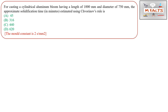The question is: for casting a cylindrical aluminum bloom having a length of 1000 mm and diameter 750 mm, find the approximate solidification time in minutes using Chvorinov's Rule. The mold constant k is given as 2 seconds per mm squared. Note that k is in seconds per mm squared but the question asks for time in minutes.